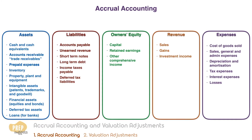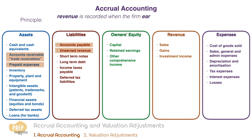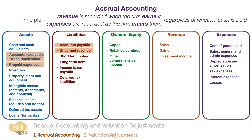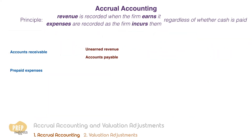In our chart of accounts, four of the accounts are accrual accounts: accounts receivable, prepaid expenses, accounts payable, and unearned revenue. The principle of accrual accounting requires that revenue is recorded when the firm earns it and expenses are recorded as the firm incurs them, regardless of whether cash has actually been paid.